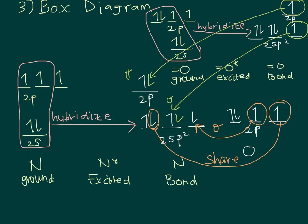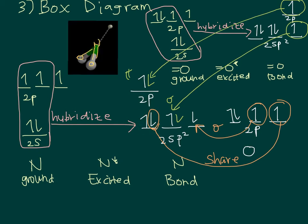We start bonding the atoms, beginning with the double-bonded oxygen. This forms the pi bond and the sigma bond with nitrogen. The singly bonded oxygen forms a sigma bond with nitrogen, sharing its electron with nitrogen. This is why we see one electron left over — this represents the unpaired free radical electron on top of nitrogen. The VSEPR diagram confirms the free radical electron here, the double bond oxygen with sigma and pi bonds to nitrogen, and the single bond oxygen with its sigma bond to nitrogen.